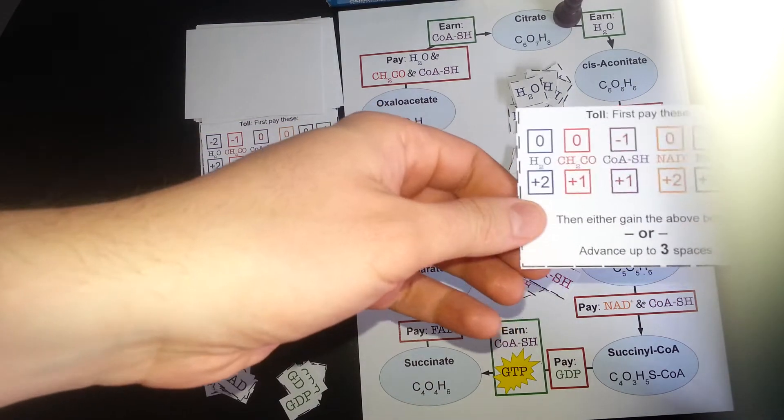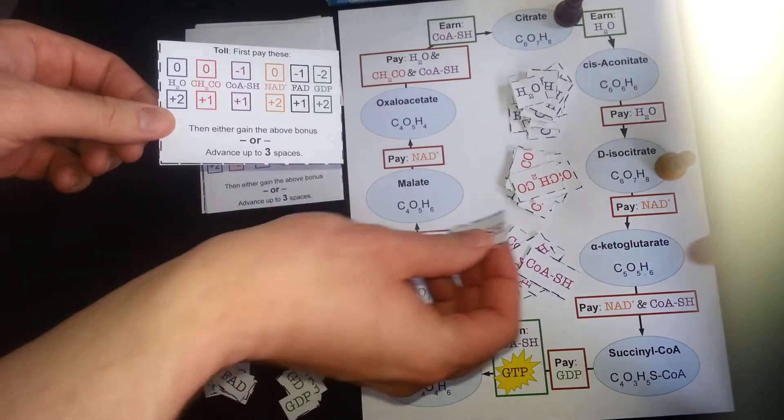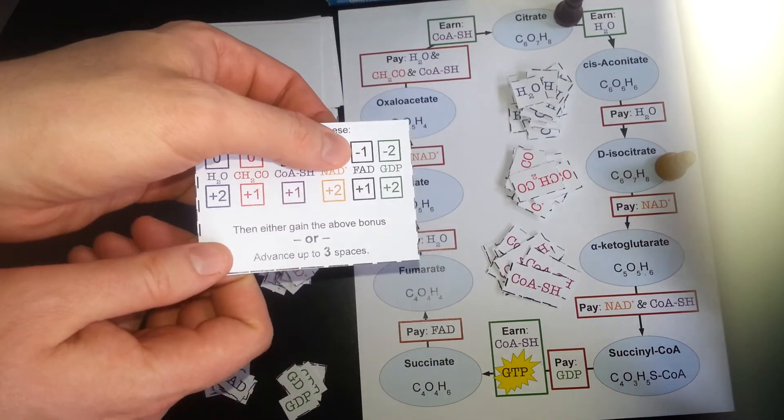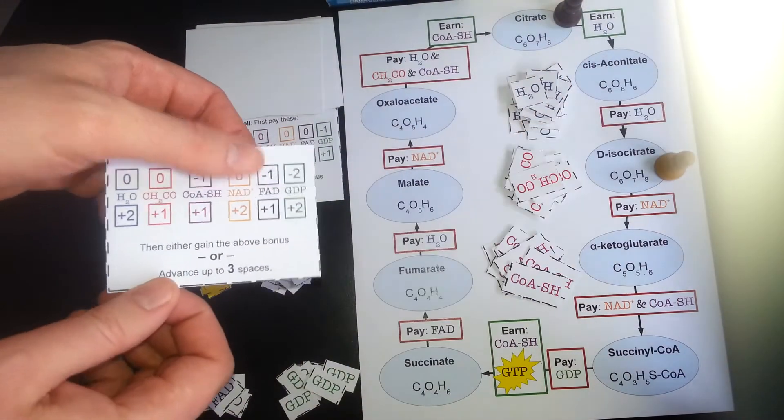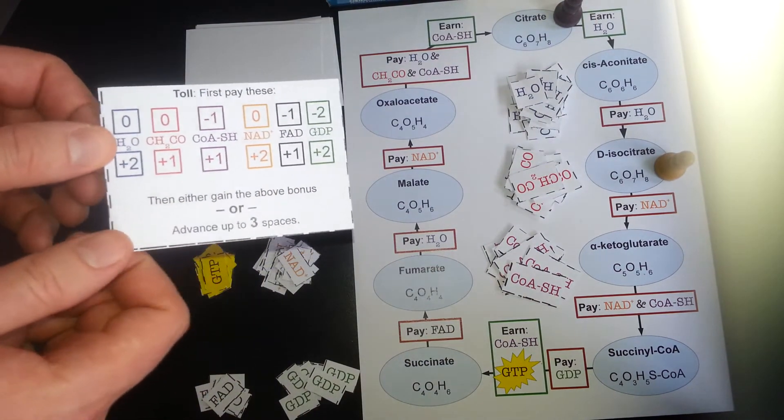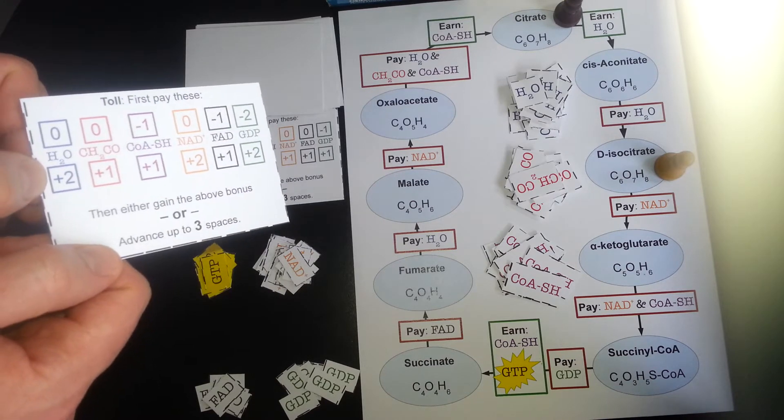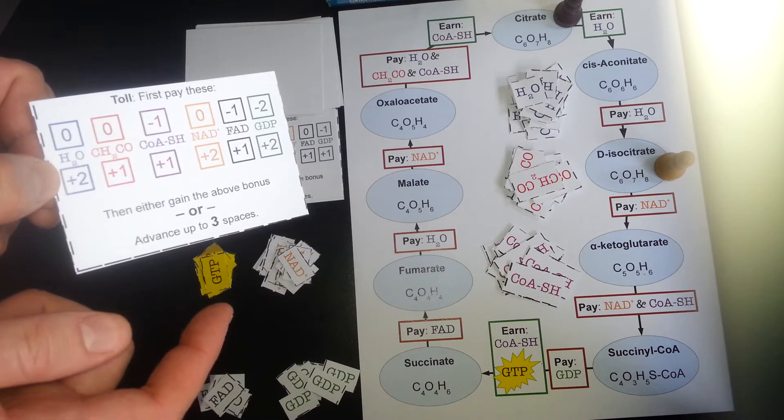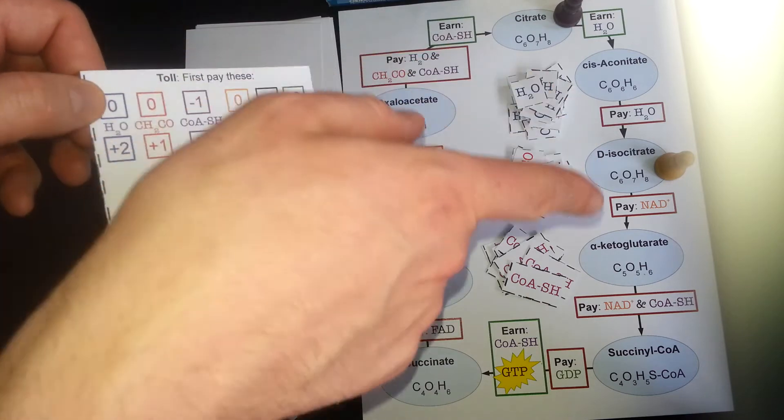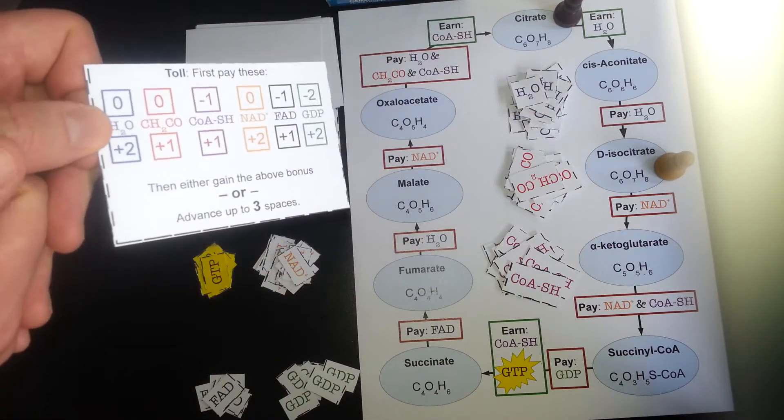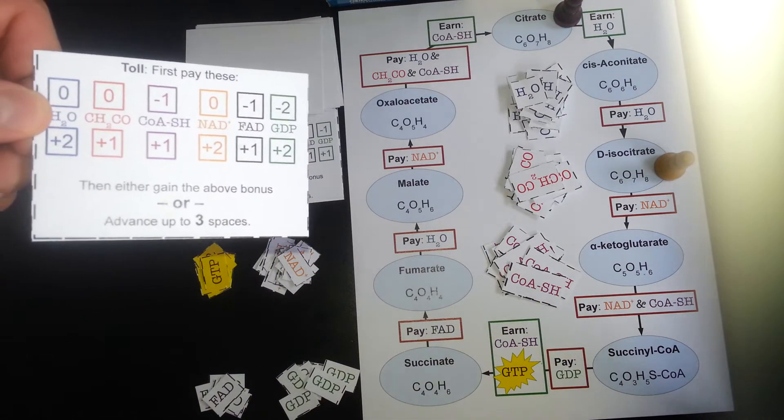Alright, so I do have the molecules to pay the toll, so I'm going to pay my CoASH and my FAD and both of my GDPs. So he has to pay as much of that toll as he can, so he did that. Alright, and then would you like to move or gain the bonus? Hmm. I think I'm going to gain the bonus. I think if you move, you can go all the way to alpha-ketoglutarate. That's true. I might want to move. Okay. I'll go for the move.